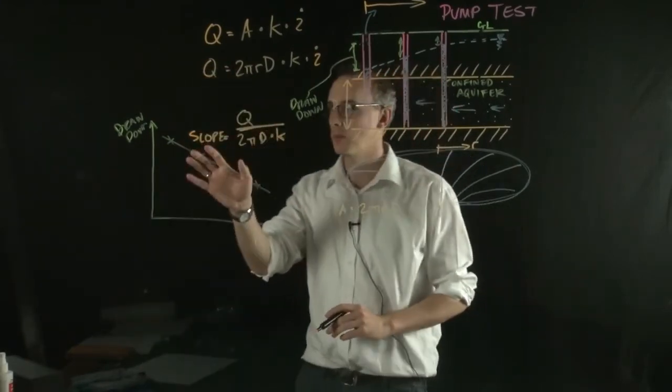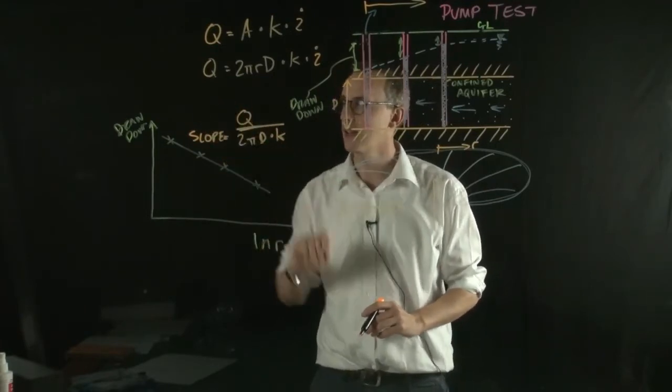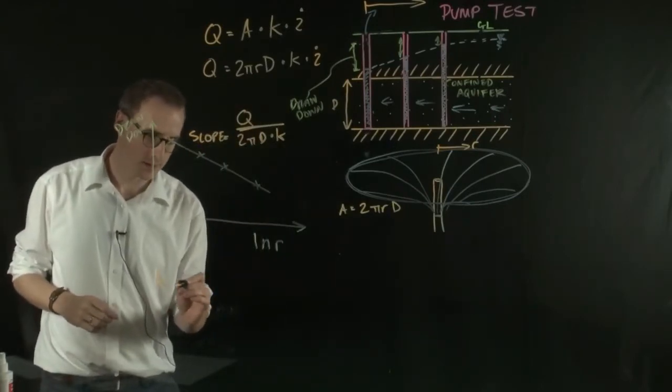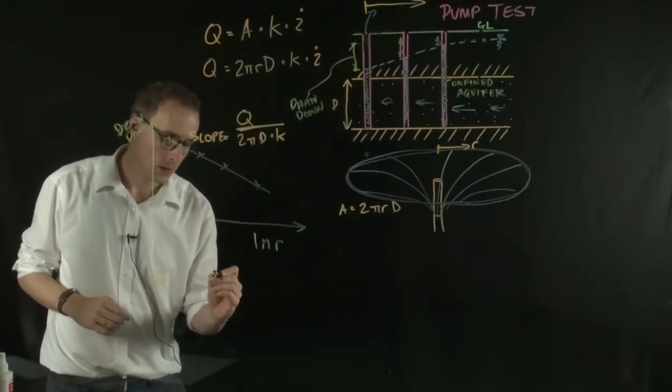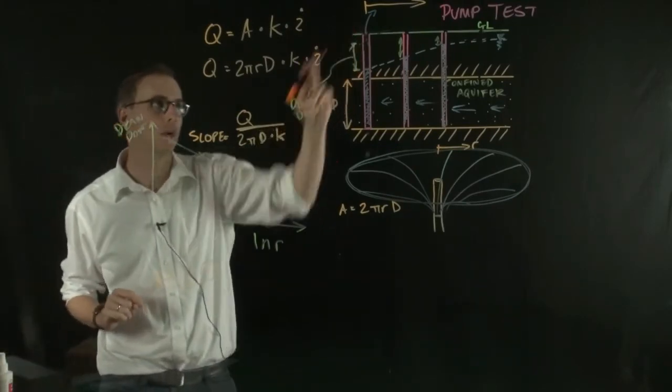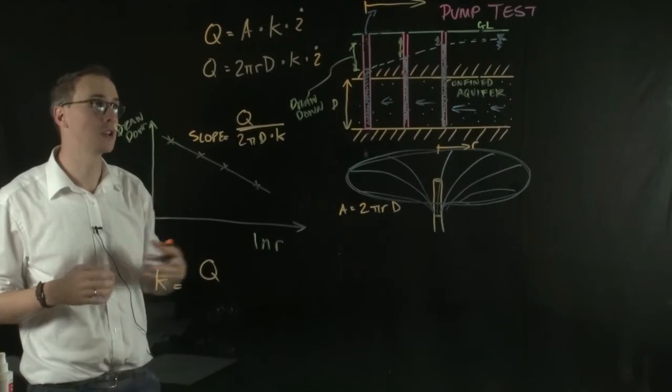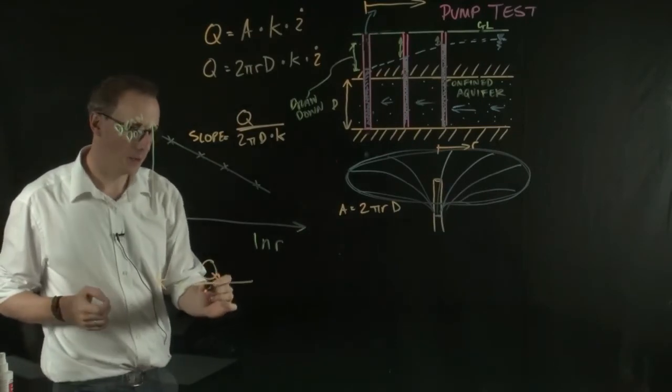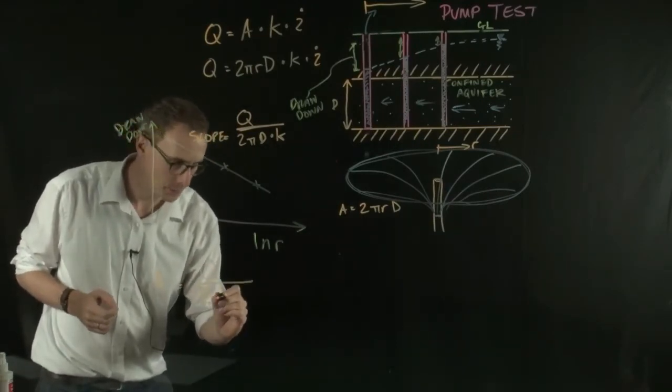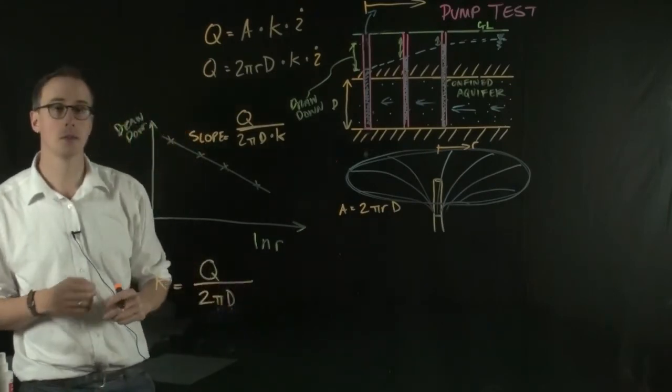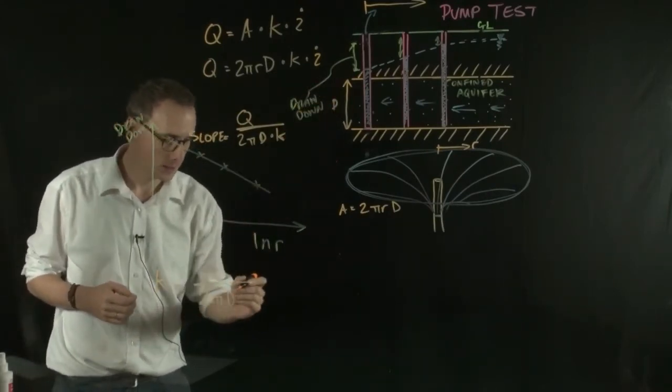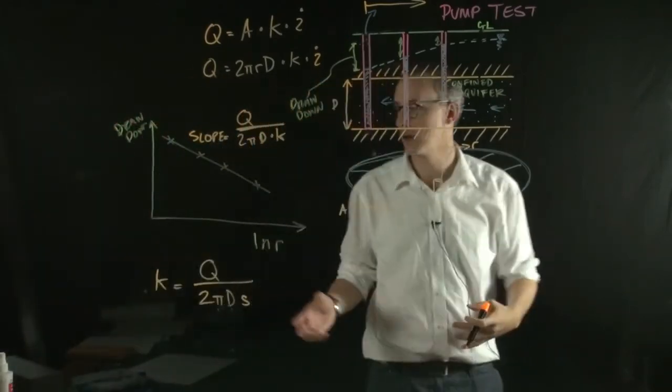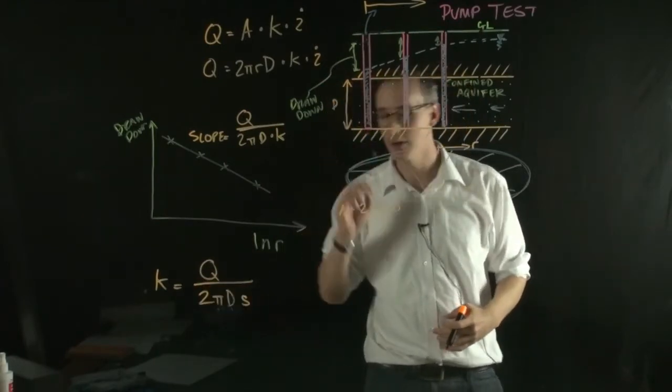So now we have an equation that we can rearrange to find K. So K is equal to Q, and we know Q because we know the rate of water that we're pumping out of the hole, divided by 2πD, and we know D because it's the thickness of the aquifer, multiplied by S, which we find from this graph through our observational wells. So we have an equation now where we can get K from a confined aquifer.